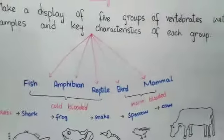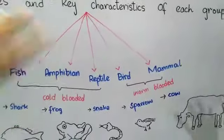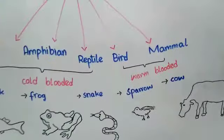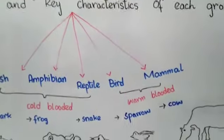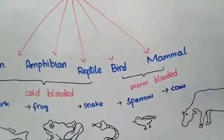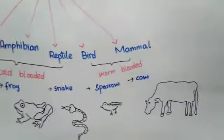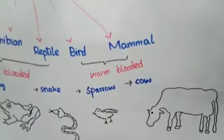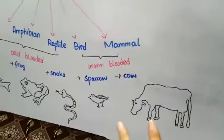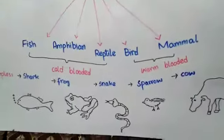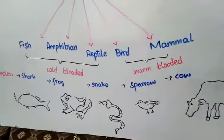Regarding habitat: fishes live in water. Frogs can live on both land and water — they are found in both habitats. Reptiles include some that live in water and some on land. Birds mostly live on land. Mammals also live on land. So birds and mammals are land-dwellers, fish survive in water, frogs live in both water and land, and reptiles are found in some water and some land environments.